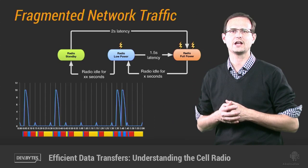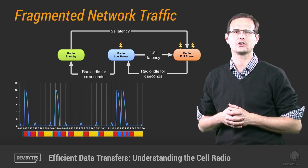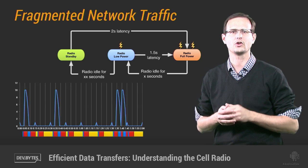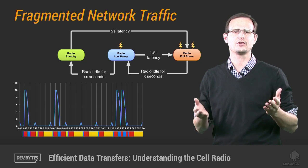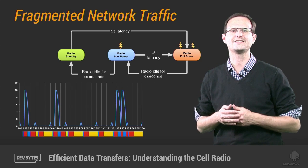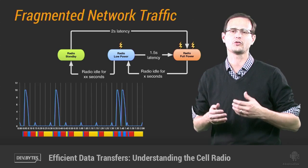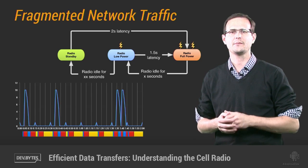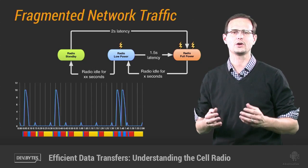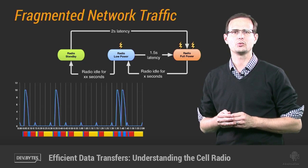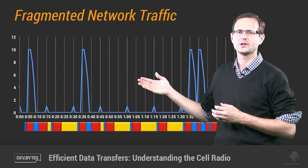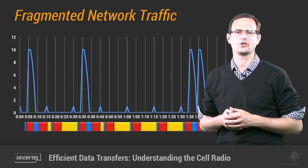Unfortunately, this results in a heavily fragmented use of the cell radio. From our knowledge of the cell radio state machine, we know that every time we perform a data transfer, the radio stays active for at least five seconds of tail time at full power, followed by anywhere from 10 to 60 seconds at lower power, before it finally returns to standby. That means every time you initiate a transfer, you're powering the cell radio up for at least 20 seconds. Looking more closely, you can see how an app like this one, whose radio use is indicated here, can drain the battery without transferring very much data.